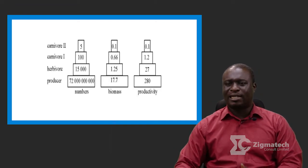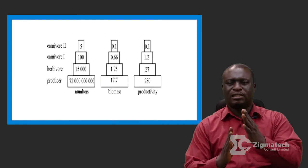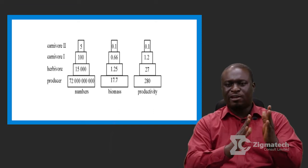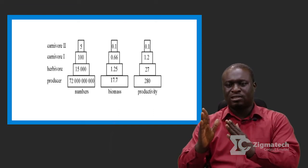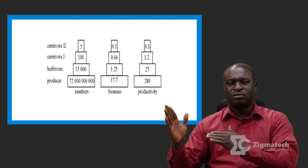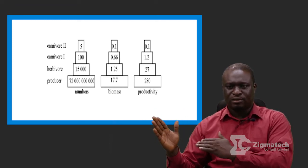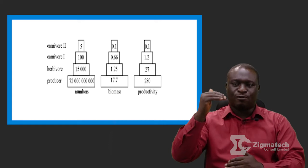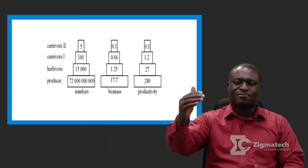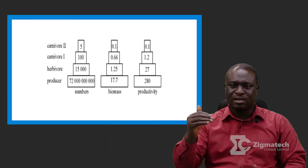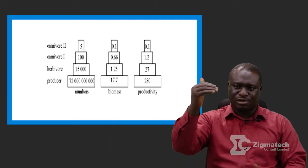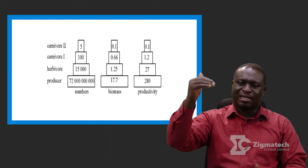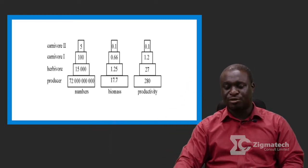If you check the next slide showing numbers — looking at producers which is grass, we have about 7 billion; the herbivore feeding on that is about 15; then the carnivore, which is the secondary consumer; and finally the tertiary consumer. You can clearly see the progressive decrease in the number of organisms at each level.